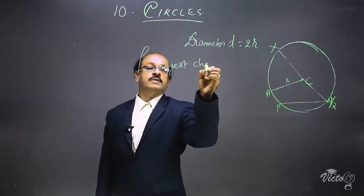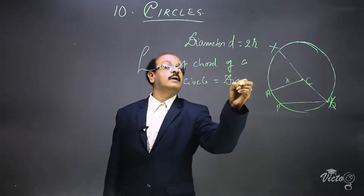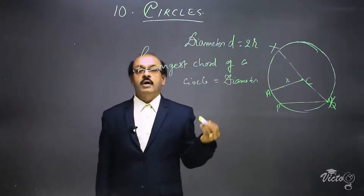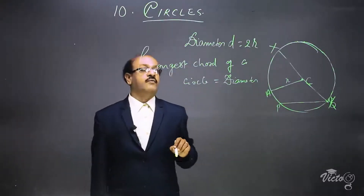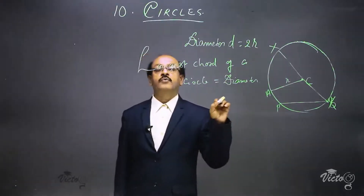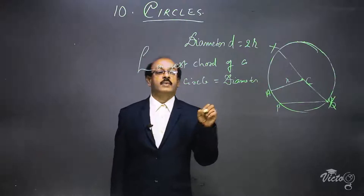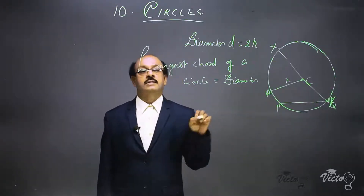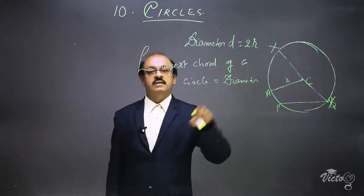The longest chord of a circle is the diameter. There are infinite numbers of radii in a circle, and we can also draw infinite numbers of diameters in a circle. A diameter is also a chord of the circle. Now we are going to study something new about a circle and a line.